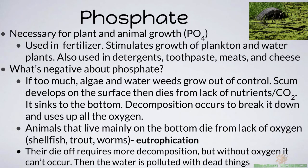Phosphates are a lot like nitrates — same song and dance. They're used in fertilizer and stimulate the growth of plankton and water plants too. They're also used in detergents, toothpaste, meats, and cheese. The problem with phosphates is that when you have too much — just like with nitrates — the algae and weeds in the water grow out of control. Scum can develop on the surface and then die from a lack of nutrients and CO₂. All the phosphates and nitrates get used up and then all the plankton die.